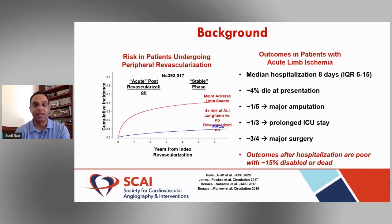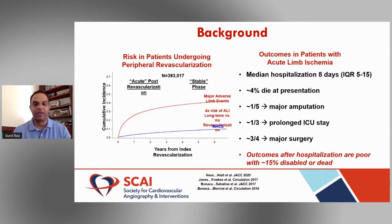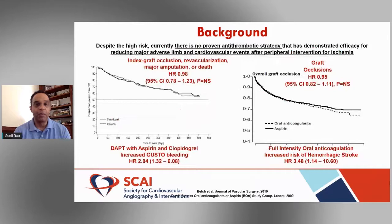The background: risk in patients undergoing peripheral revascularization remains very high. Four percent will die at presentation — mostly patients with gangrene; 20% have major amputations. I live in the amputation belt in the southern United States, where amputation rates are very high. About a third will have prolonged ICU stays, and 75% require major vascular surgery. Aggregating outcomes after hospitalization, about 15% will be either disabled or dead.